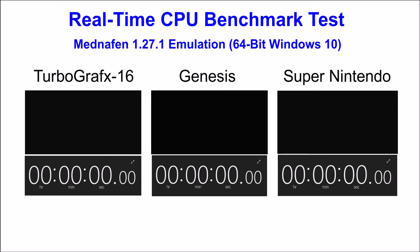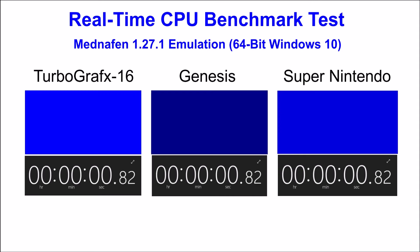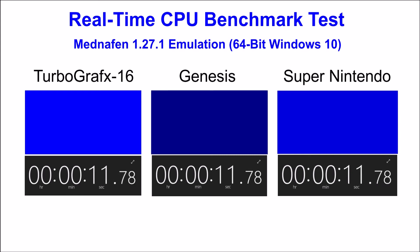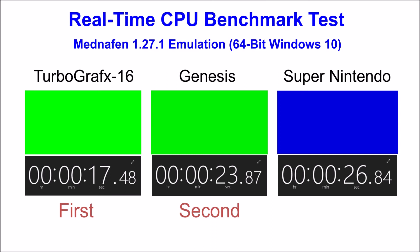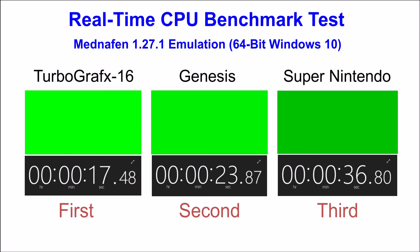We have the consoles side-by-side and we'll begin testing in a few seconds. As expected, the Super Nintendo was the slowest, primarily due to its relatively low clock speed. I'm rather surprised that the TurboGrafx-16 was the fastest, and by a fairly significant margin.